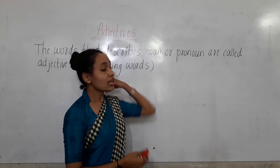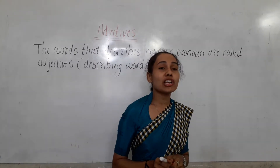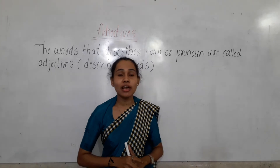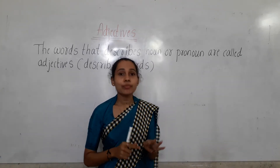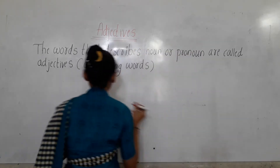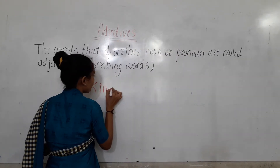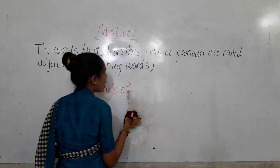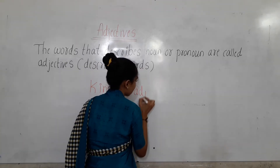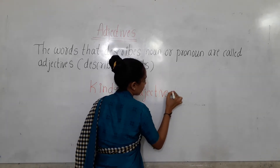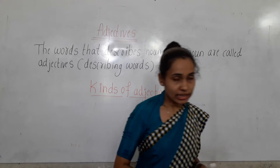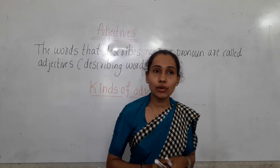We have also learnt the kinds of adjectives in the previous class. Which are those children? The kinds of adjectives are: adjective of quality, adjective of quantity, and adjective of number.